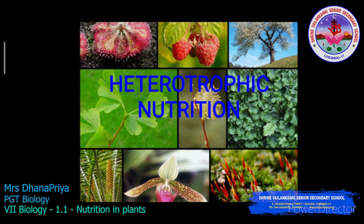Hello students, in last class we discussed about nutrition in plants, where we studied about sources of food and types of nutrition. The types of nutrition are of two types: one is autotrophic and the other is heterotrophic. Autotrophic nutrition involves self-production of food, which we discussed in brief in the previous video.